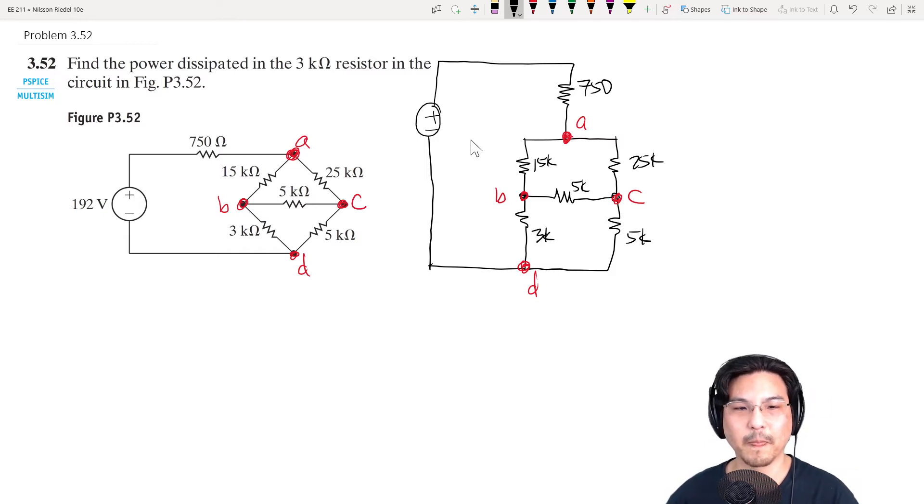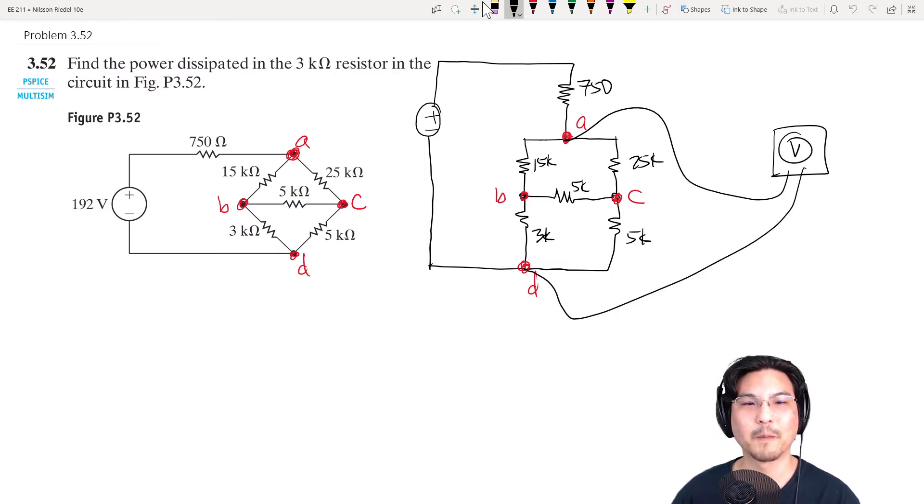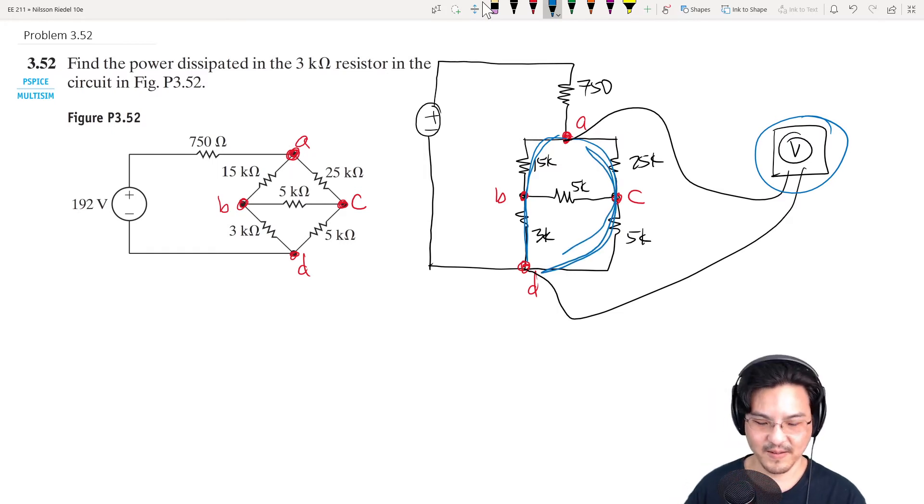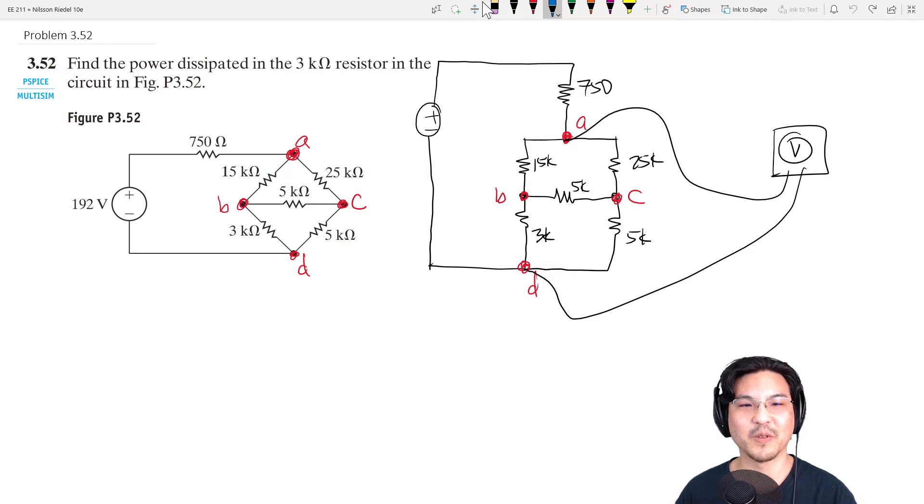If you were to take a voltmeter here and measure the voltage from A to D, notice that if you follow this branch here, it's whatever that voltage is, which is the same as if you went down this branch over here. The total voltage from A to D over here is the same as the voltage here. It doesn't matter that this resistor is here. We're just talking about voltage.